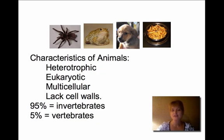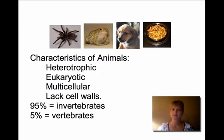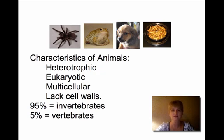95% of the animals on Earth are invertebrates, meaning they don't have a backbone, and only 5% are vertebrates. We tend to think about vertebrates first — if I say picture an animal in your mind, you'll probably picture one with a backbone — but there are many different animals, and in these presentations I'll be covering lots of different animal phyla, or groups of animals.